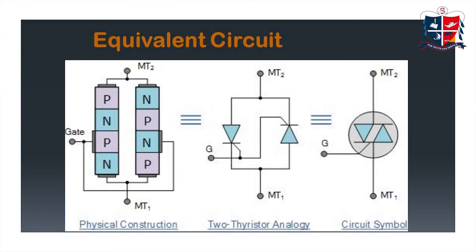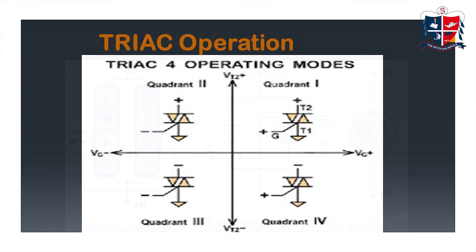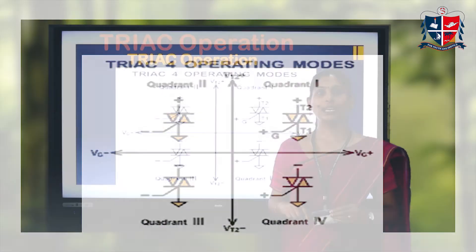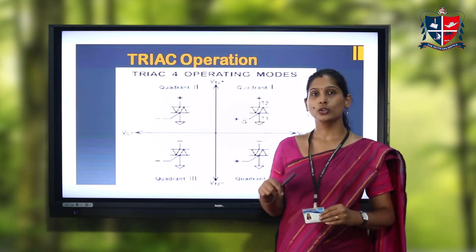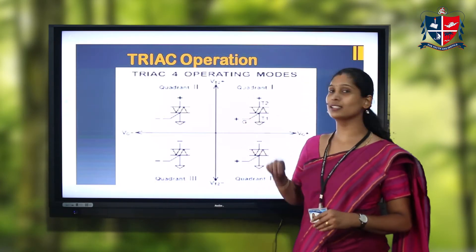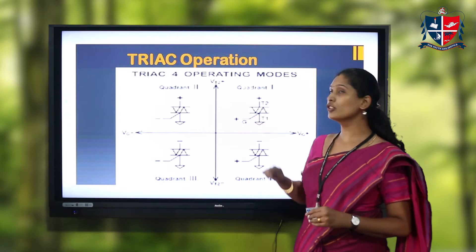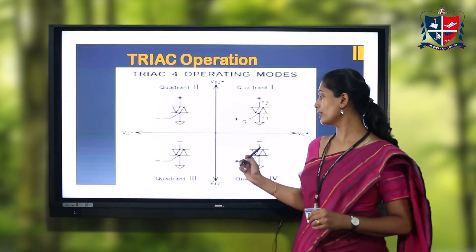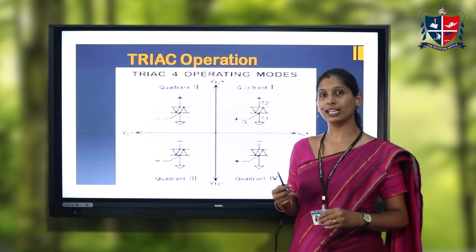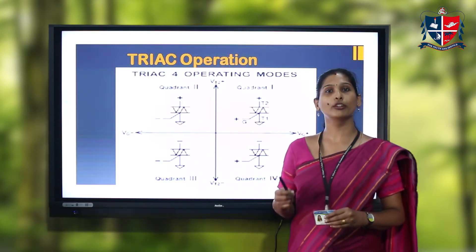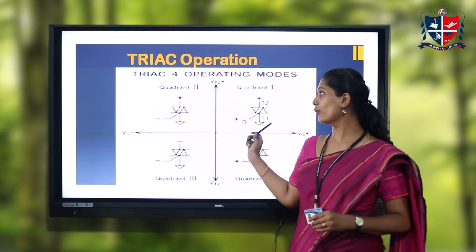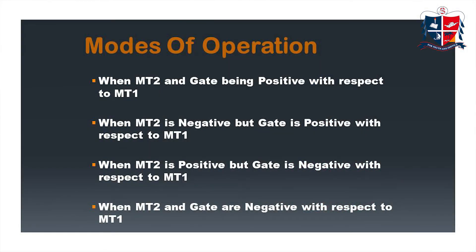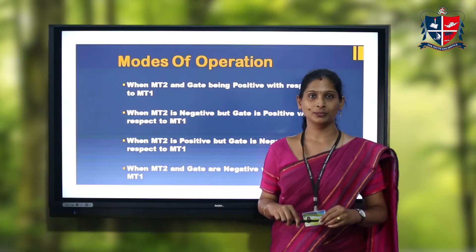This is the two-thyristor analogy of TRIAC and this is the corresponding circuit symbol. Now let's see the working of TRIAC. TRIAC mainly works under four modes of operation. Those four modes have been depicted in this graph — quadrant one shows mode one, quadrant two shows mode two, quadrant three refers to mode three, and quadrant four refers to mode four.